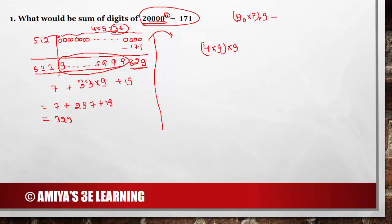We have to subtract 171. Instead, I would go for the sum of digits of 170 — just one less — that is 7 plus 1 is 8. I subtracted 8, and for 2 raised to power 9, I am going for the sum of digits of 2 raised to power 9 minus 1, that is 511, which is nothing but 7. So what I am going to do is 7 plus 36 into 9 minus 8, and we will get nothing but 323.